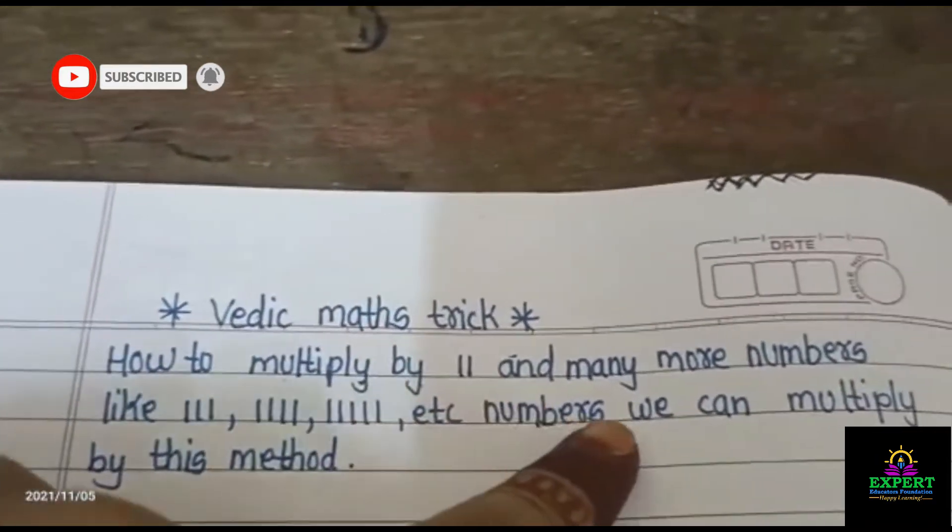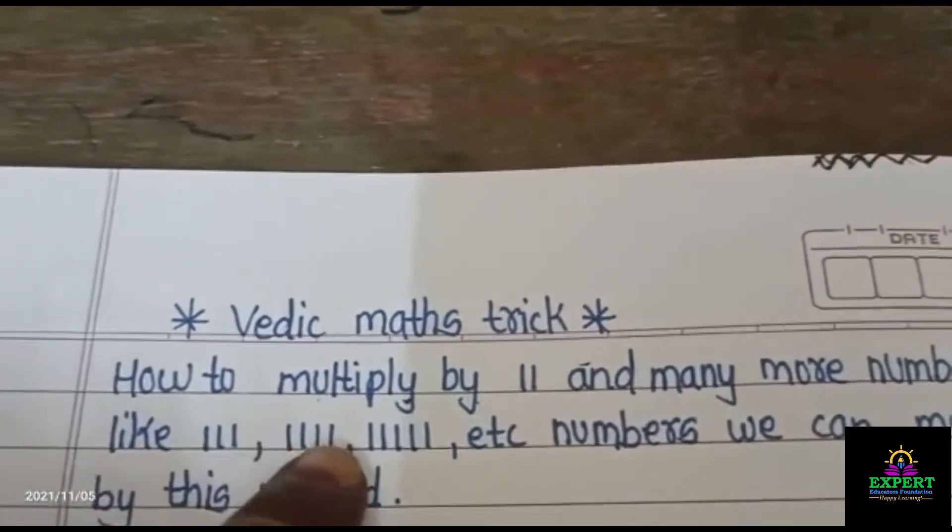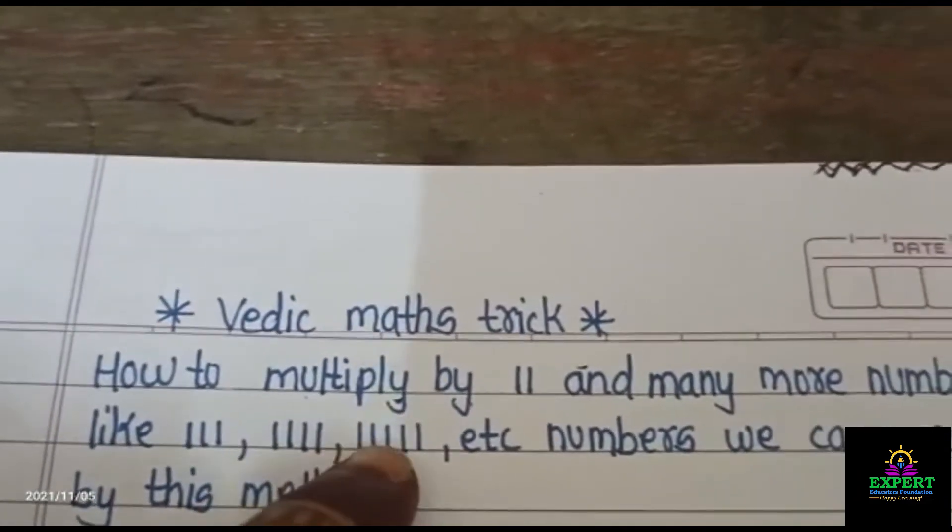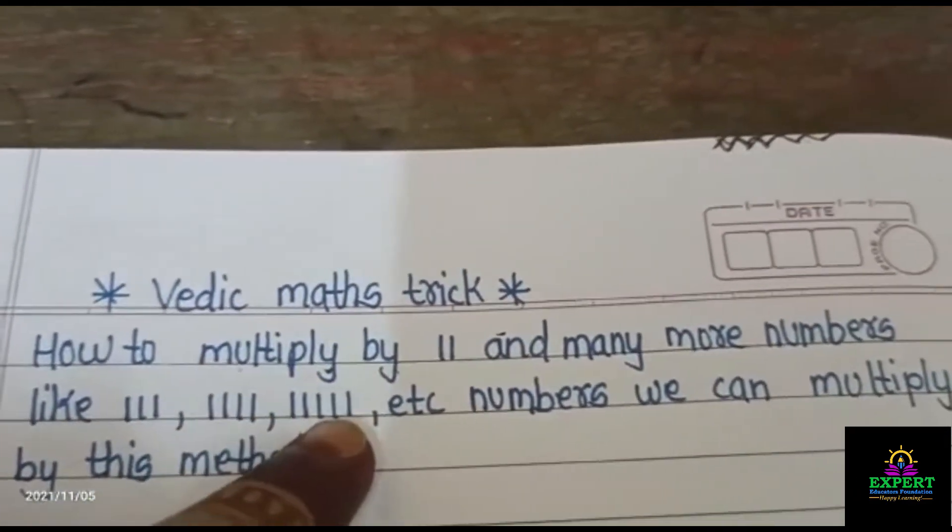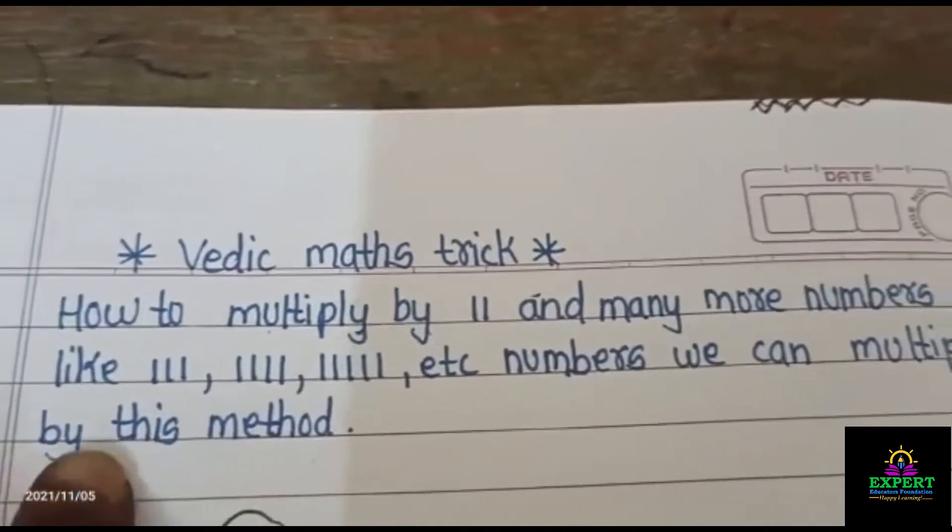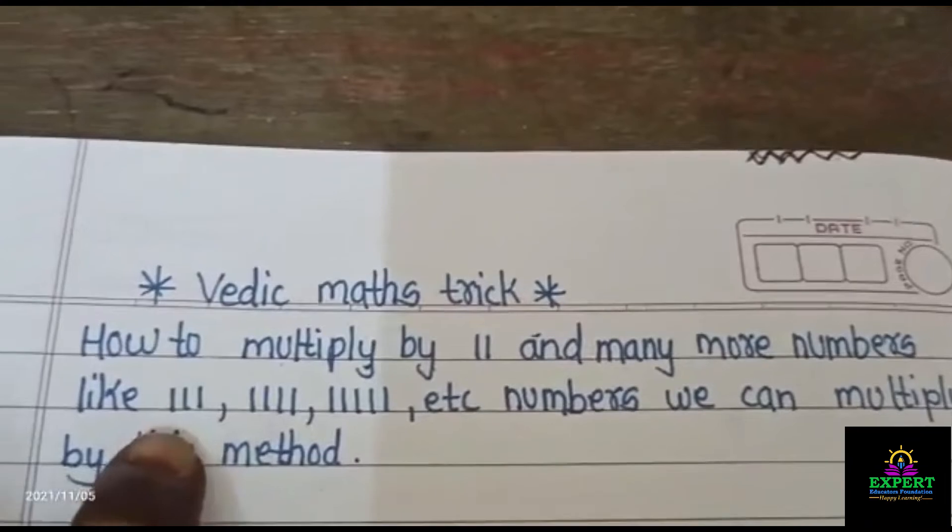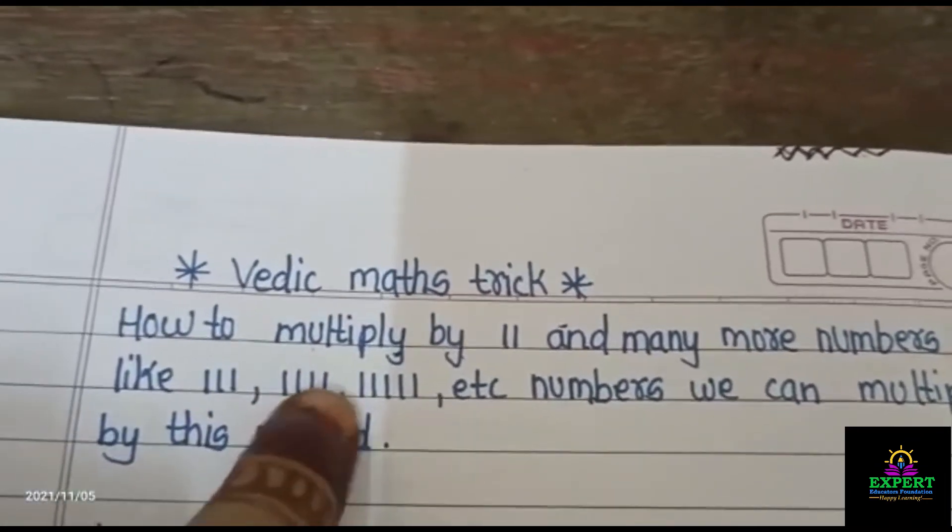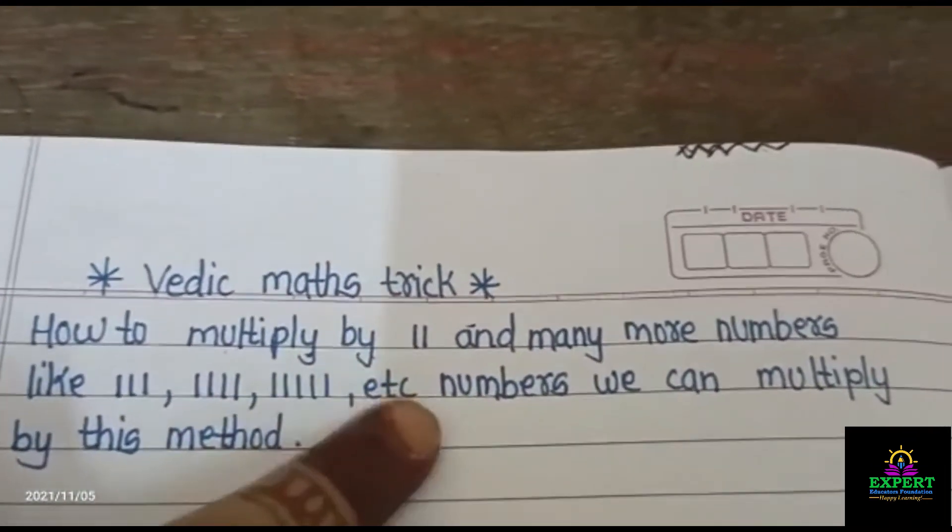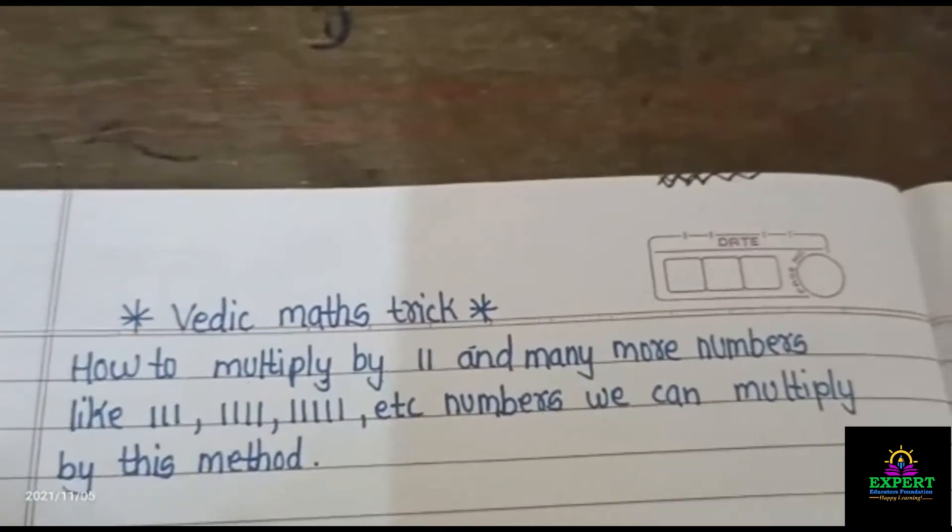How to multiply by 11 and many more numbers like 111, 1111, 11111, etc. numbers we can multiply by this method. The number should be 111 means 3 times 1, 4 times 1, 5 times 1, etc. numbers we can multiply by this method. So let's start.